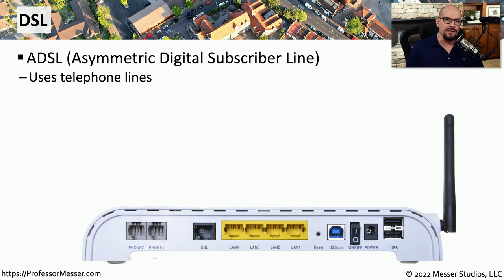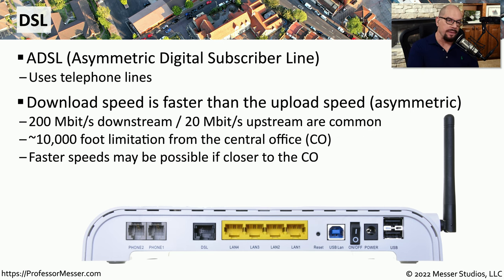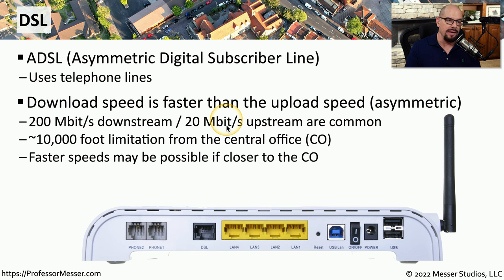Another technology where we're sharing some existing copper that we may already have in our home is DSL, which stands for Digital Subscriber Line. In most cases, it is ADSL, or Asymmetric Digital Subscriber Line. DSL uses the existing telephone lines in your home to provide you with high-speed network connections. We call this connection asymmetric because the speed of the download is often faster than the speed of the upload. It's not uncommon on DSL networks to have a downstream speed of around 200 megabits per second, but the upstream speed is limited to around 20 megabits per second.